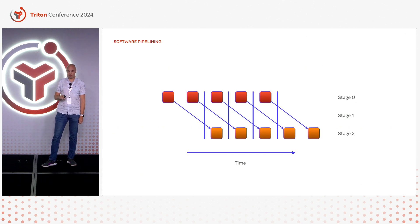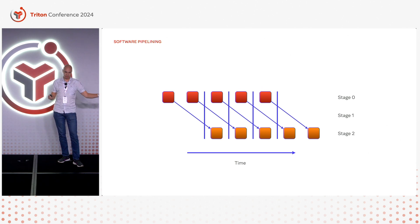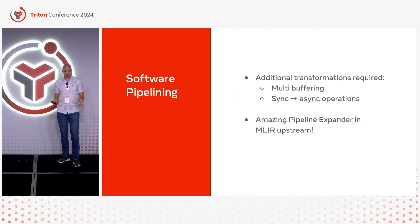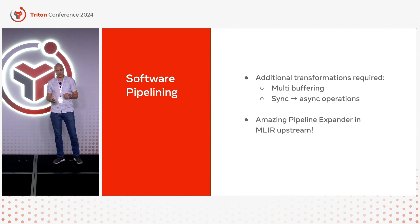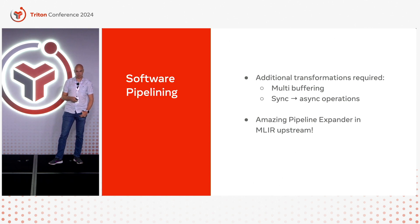There is one more very important and interesting thing: you can have more stages than operations that you want to distribute between them. In this example we have three stages and only two are populated with operations, with stage one being effectively empty. With this, you can make your dependencies longer, helping to hide latency of very long operations — your operations in stage two wait for something that happened two iterations back instead of just one. This is actually what we usually do in Triton.